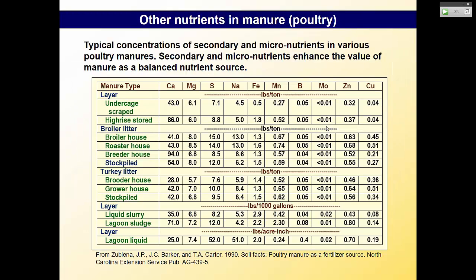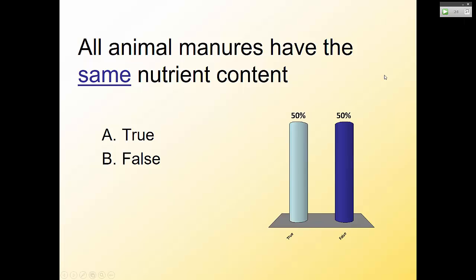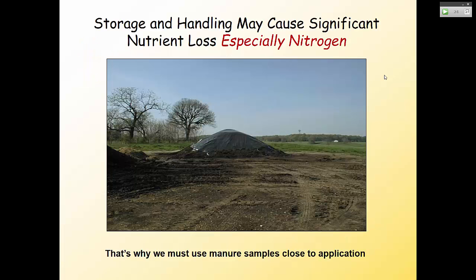Another reason to sample rather than guess. This table — also in your book — shows that not only do N, P, and K vary, but calcium, magnesium, sulfur, and other secondary nutrients also vary in manures. Quiz: all animal manures have the exact same nutrient content — false. Not only do manures differ in nutrient amounts, but how they are stored and handled also changes that content.